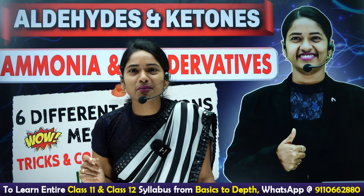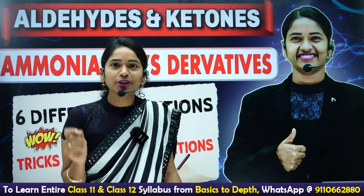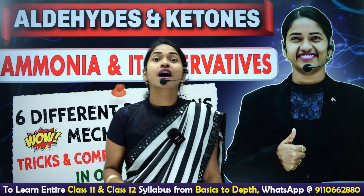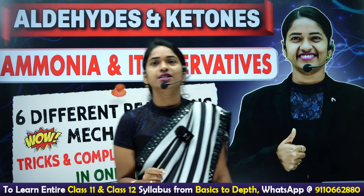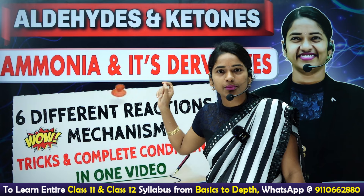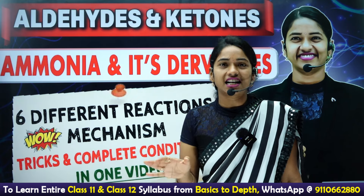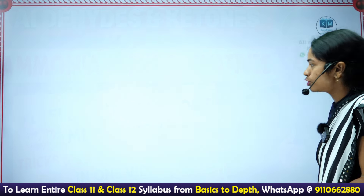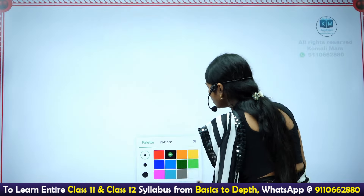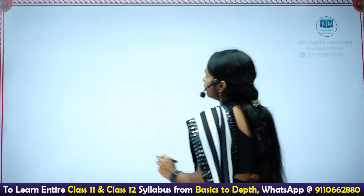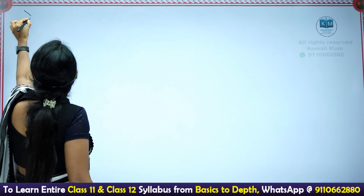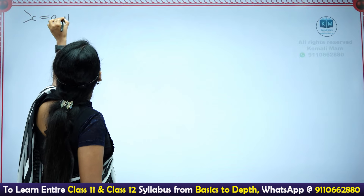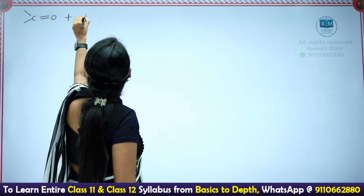Hi students, I'm your Kumali ma'am. In this session I'm going to teach you all about ammonia and ammonia derivatives reactions with carbonyl compounds. This topic is from the Aldehydes, Ketones and Carboxylic Acids chapter from class 12 chemistry. Carbonyl compounds are compounds which have a C=O group, and these C=O compounds react with ammonia or ammonia derivatives.